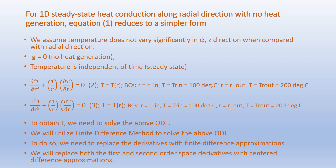The equation then reduces to: d²T/dR² + (1/R)(dT/dR) = 0, where T is a function of R only. The boundary conditions are: at R = R_in, T = T_Rin = 100°C; and at R = R_out, T = T_Rout = 200°C.